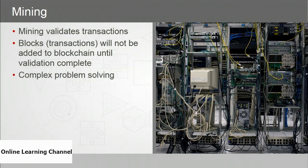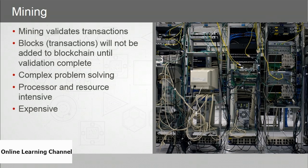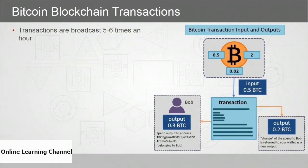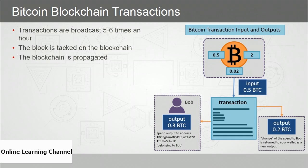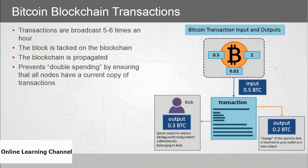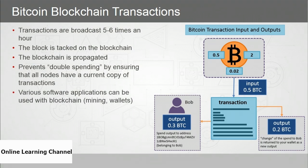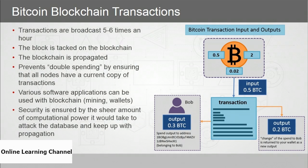That makes the bitcoin validation process expensive. Transactions are broadcast about six times an hour, blocks are added to the blockchain, and the ledger is propagated throughout the network so every user has the same copy. This process prevents double spending by ensuring all nodes have a current copy of all transactions. Security is ensured because of the sheer amount of computational power it would take to attack the database and keep up with its propagation — the larger the network, the more unlikely an attack.